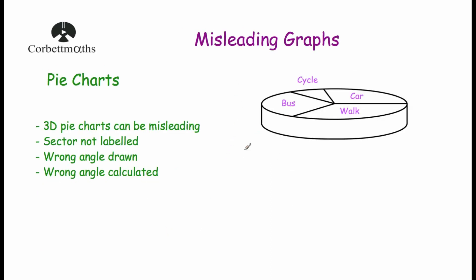Our next type of graph is a pie chart. First of all, 3D pie charts can be very misleading — the sectors at the front are much more prominent than those at the back, so your attention is drawn to those big sectors at the front while the ones at the back seem much smaller. Another way a pie chart can be misleading is if one of the sectors isn't labeled. Also, one of the angles might be drawn incorrectly — for example, drawn at 110 degrees instead of 100 — or the angle may have been calculated incorrectly.